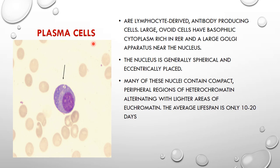Plasma cells are lymphocyte-derived antibody-producing cells — very important — and are responsible for antibody production. They are large ovoid cells with a basophilic cytoplasm rich in rough endoplasmic reticulum and a large Golgi apparatus near the nucleus. The nucleus is eccentric and spherical. Many of these nuclei contain compact peripheral regions of heterochromatin alternating with lighter areas of euchromatin. The average lifespan of plasma cells is only 10 to 20 days.